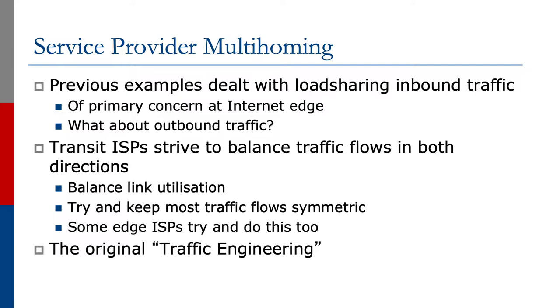The previous examples dealt with load sharing of inbound traffic, which is the primary concern at the internet edge. But what about outbound traffic? We've left it as nearest exit, which is fine for simple cases, but quite often it's not sufficient for many network operators. Transit ISPs strive to balance traffic flows in both directions, to balance link utilization, and keep most traffic flows symmetric. The last thing a transit provider wants is traffic going all the way around the globe, out one direction and coming back in the other. Some edge network operators will also try to balance link utilization and keep traffic flows symmetric. This has been known as traffic engineering since the early days of the internet.